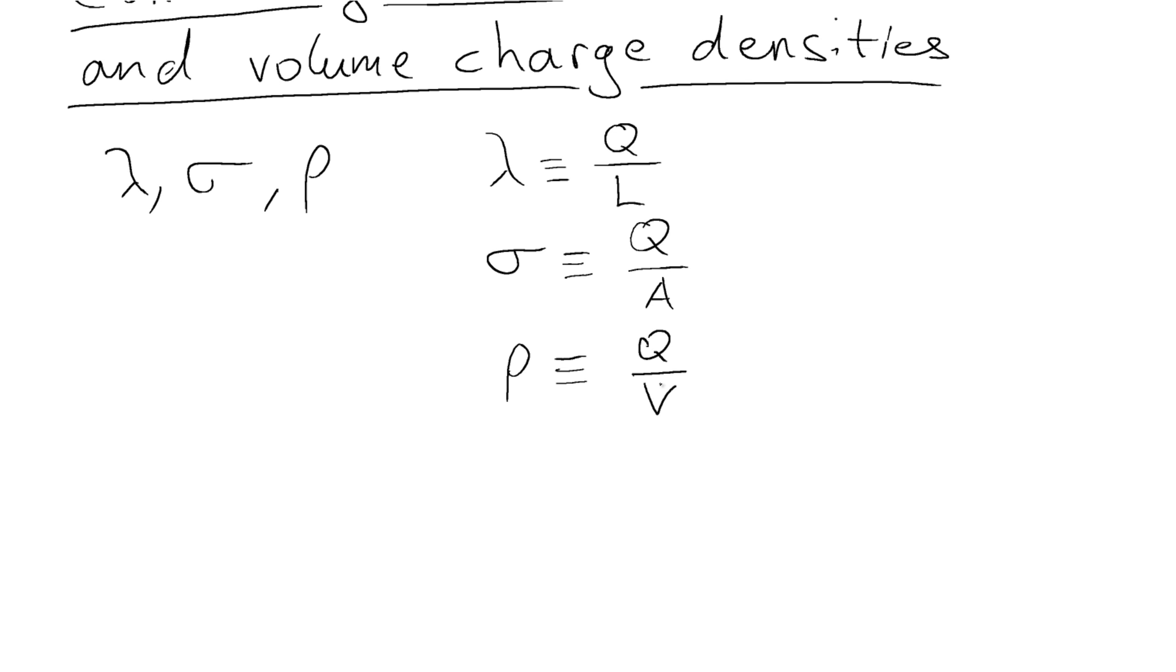So again the question is how do we go back and forth between them. So let's for example say we have an area charge density, how do we get a volume charge density? The good thing is that if we consider the total charge, let's say the total charge Q, we have that same amount of charge Q in both of the equations if we're looking at the entire object.